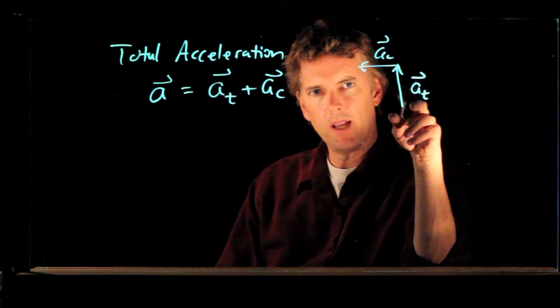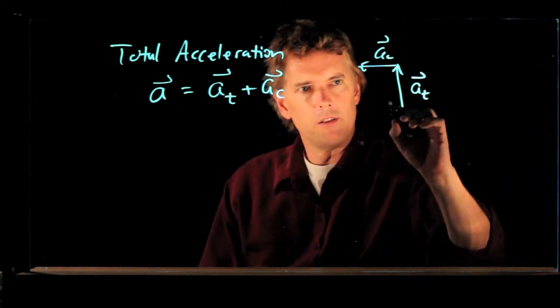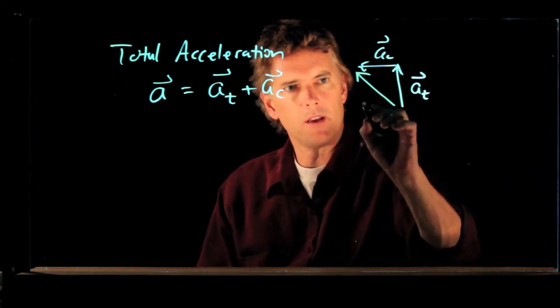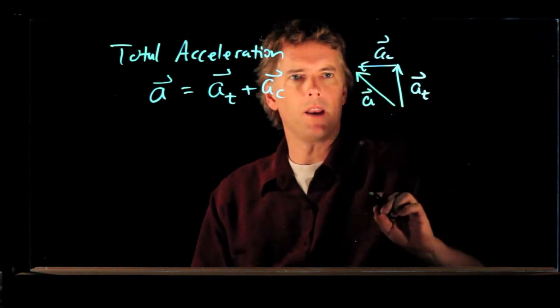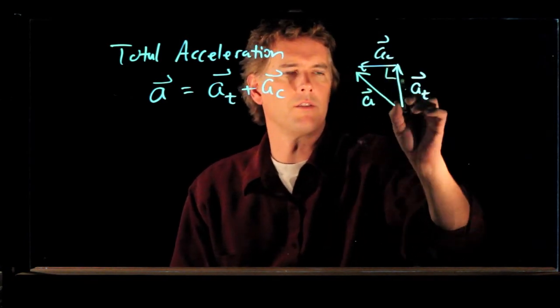And so let's take our two vectors and put it like that. a t was up, a c was towards the center of the circle. What is a? It's right there. It's the hypotenuse of that triangle. This is the right angle.